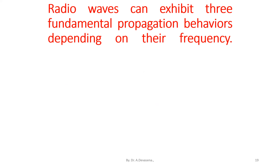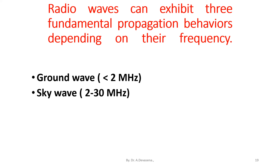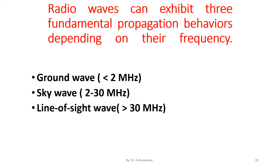Radio waves can exhibit three fundamental propagation behaviors depending on their frequency. The first is ground wave, with frequency less than 2 megahertz. The second is sky wave, with frequency between 2 to 30 megahertz. The third is line of sight wave, with frequency greater than 30 megahertz.